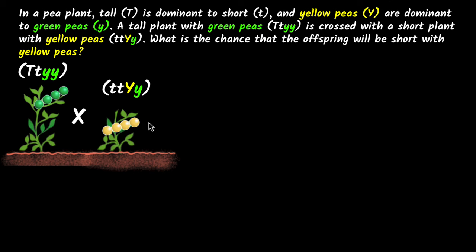Now the question is, what will we get when we cross them? We have two traits and they're both hybrids — that's why it's called dihybrid cross. We use something called the independent assortment law, which basically says that when sperms and eggs are formed, the alleles of the height and the alleles of the color assort independently.